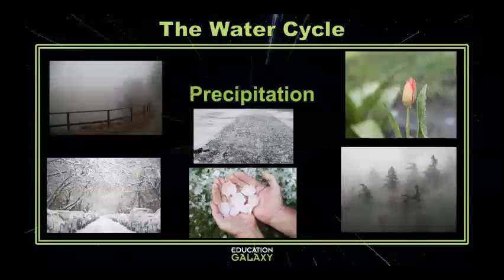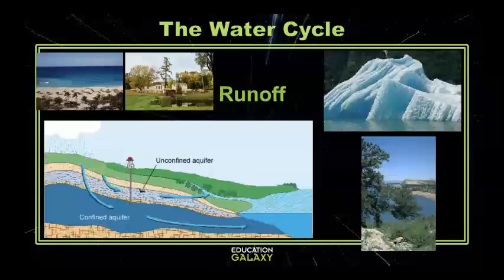When we look at precipitation, it doesn't just have to be rain. It can also be snow, sleet, hail, mist, or even drizzle. And water runoff doesn't always end up back at the ocean. A lot of it ends up in frozen glaciers. It can end up in ponds, lakes, and it even goes underground to aquifers and groundwater.